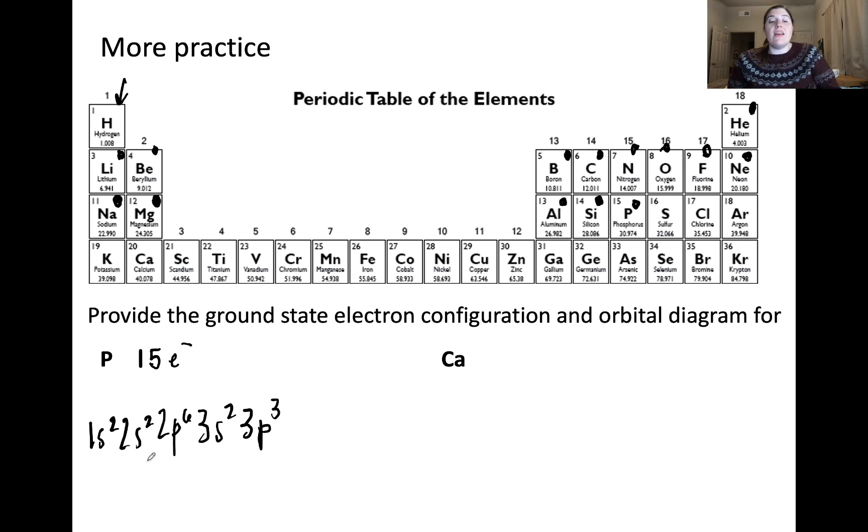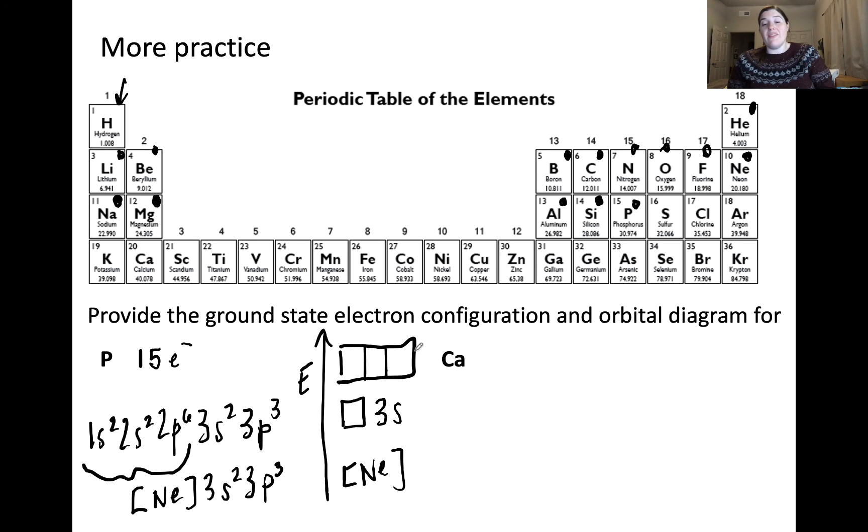Or we can write the abbreviated electron configuration using the nearest noble gas shortcut. So all of these electrons represent the core electrons, which has the electron configuration of neon, 3s2, 3p3. And we can draw, of course, an energy diagram containing the orbitals. I'm going to just write the noble gas core here and start from the 3s. So I'm only showing the valence electrons here. So we have the 3s and the 3p orbital. The 3s contains two electrons, as we see here. The 3p orbital contains three unpaired electrons.